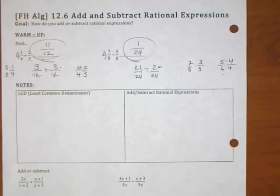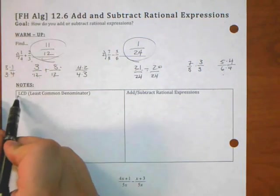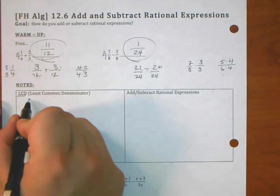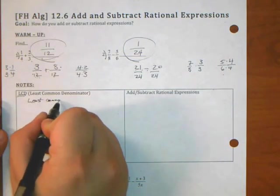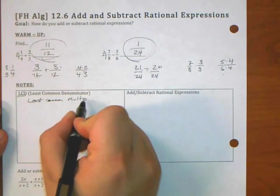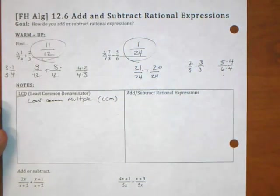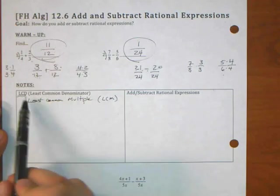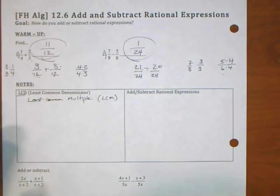That same process we're going to use even if there's variables, which is exactly how we're going to add and subtract rational expressions. To do that, we need to figure out what we're finding down here is the least common denominator. Sometimes it's called the least common multiple. You may see that as well, LCM, there's other terminology. I believe the book uses LCD. These are the same things.